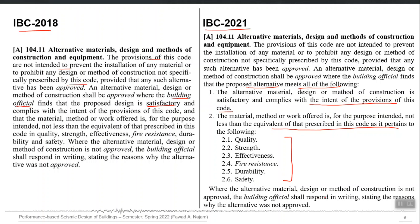If the alternate material, design, or method of construction is not approved by the building official, he or she shall respond in writing stating the reasons why the alternative was not approved. As part of this code requirement, the designer proposing an alternate design methodology should apply to the authority referred to here as the building official. The building official will check the alternative based on these two criteria, and if it meets them it can be approved; otherwise, the reasons for not qualifying are explained in writing.